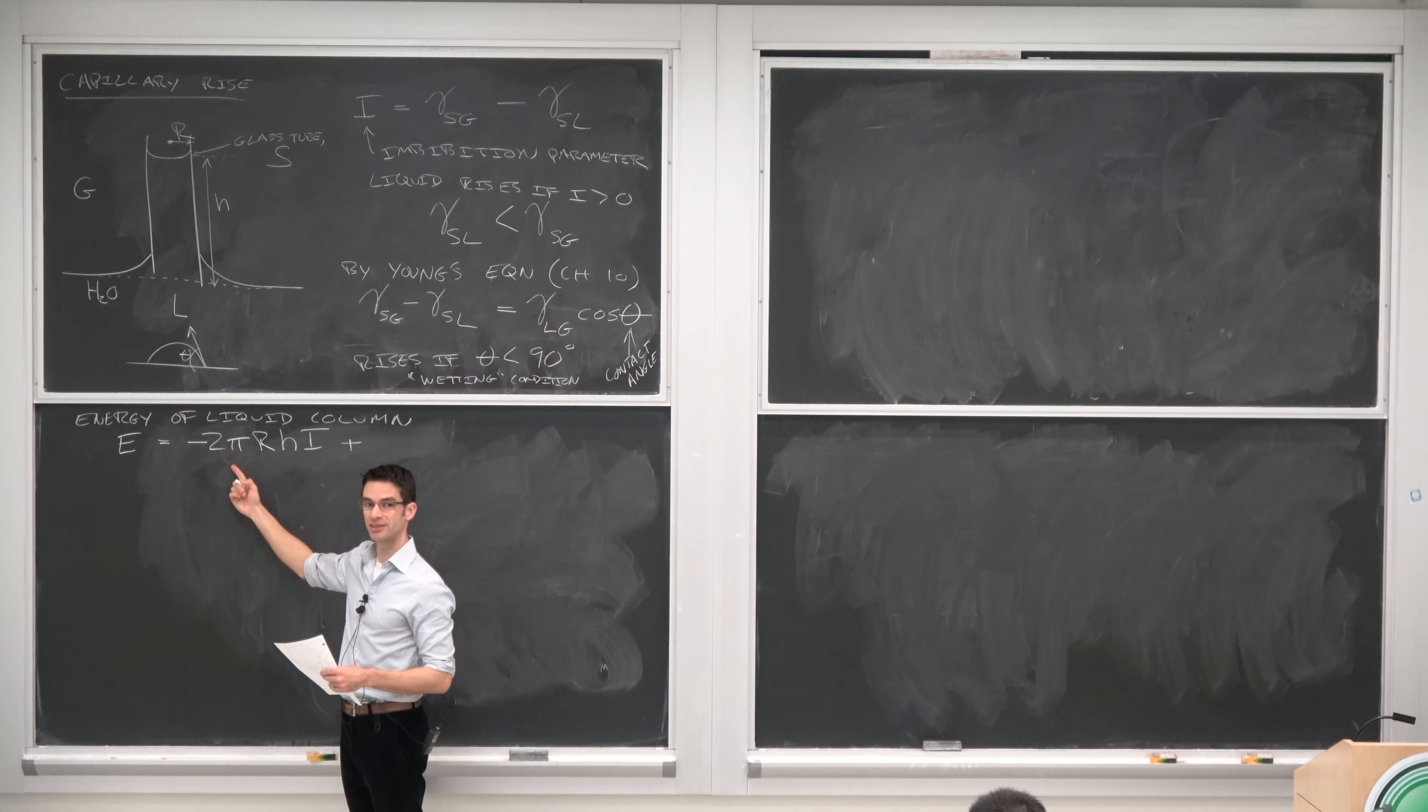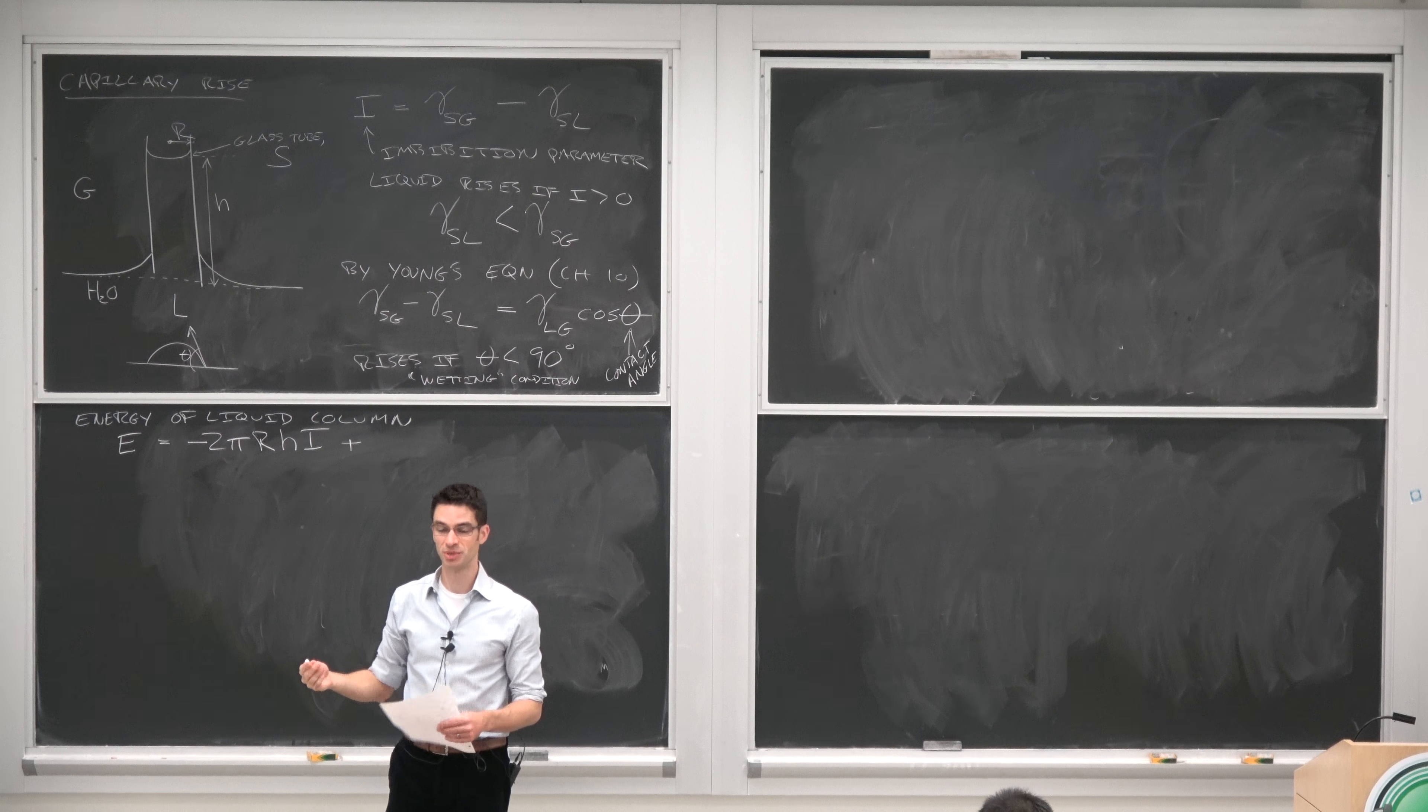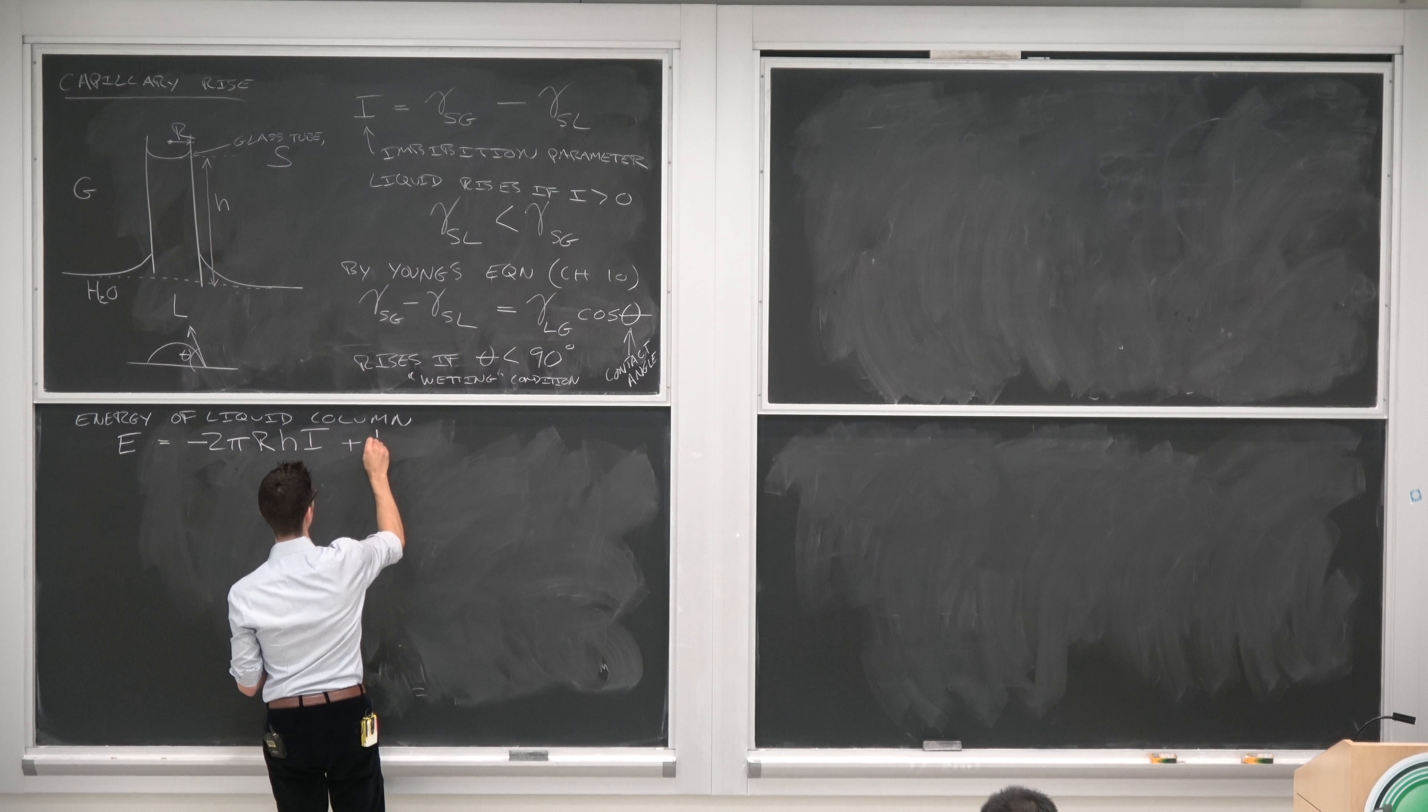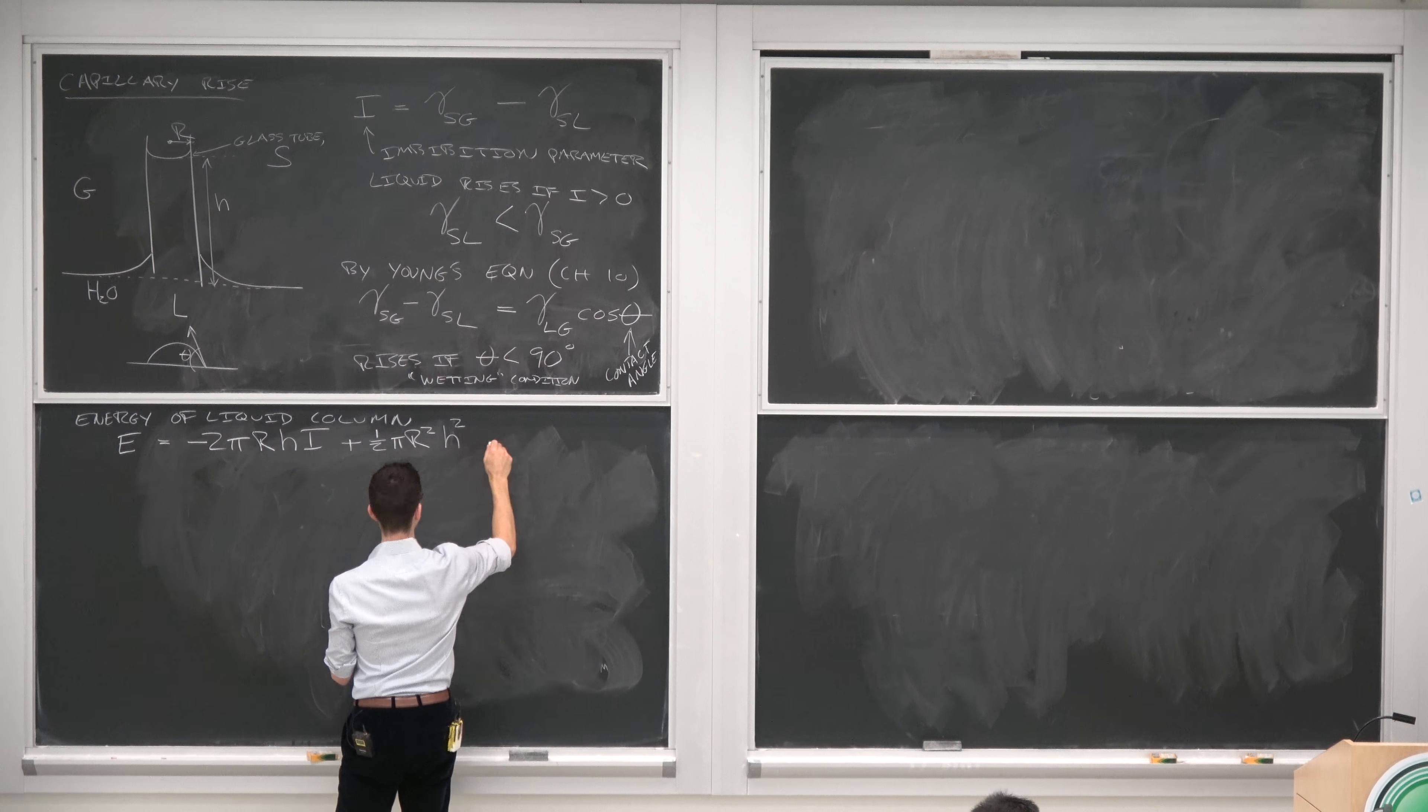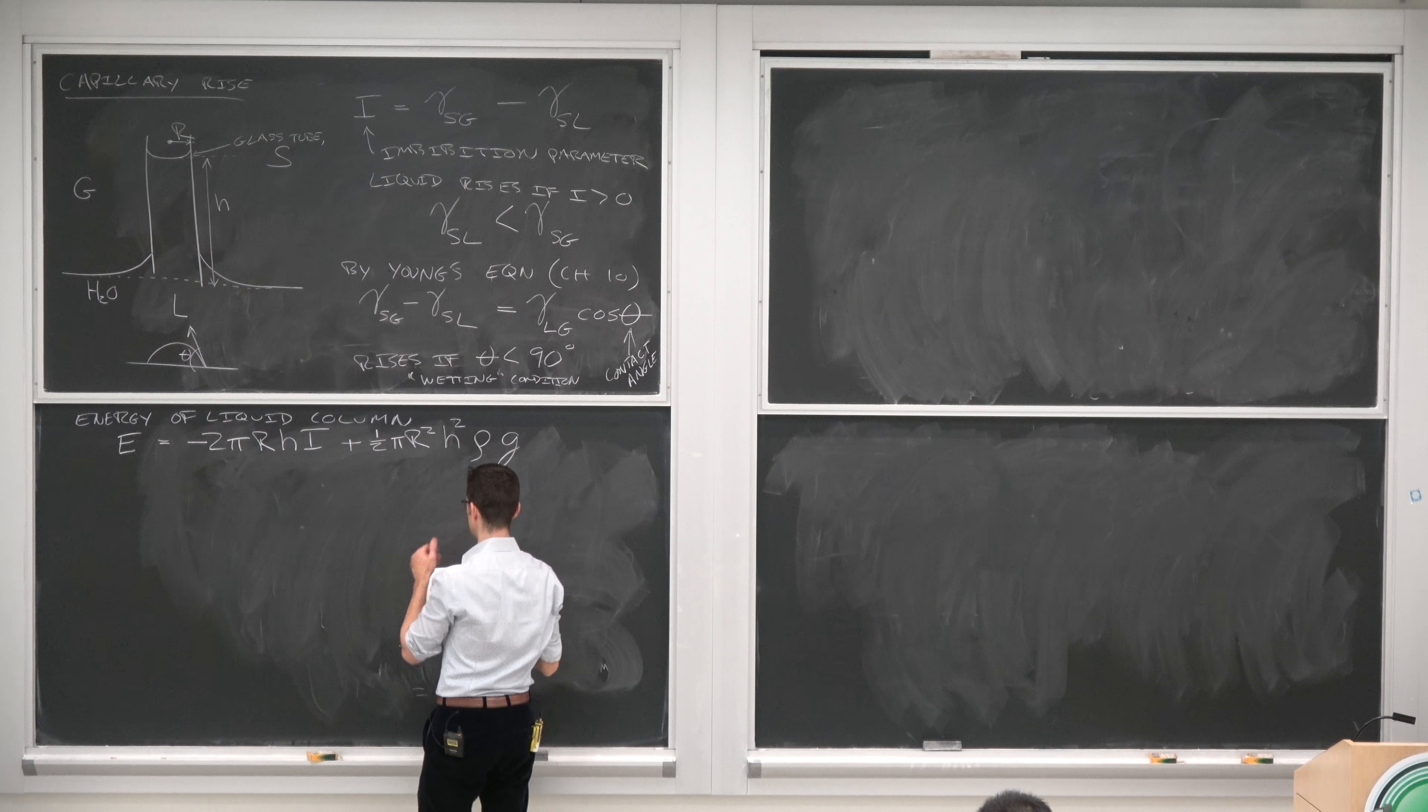Plus you have some gravitational terms. So this one serves to lower the energy. And then we have some parameter that serves to increase the potential energy, which is the gravitational pull against the column of water rising in the tube. And that is one half pi R squared H squared rho, which is the density of the liquid, G, which is the acceleration due to gravity.